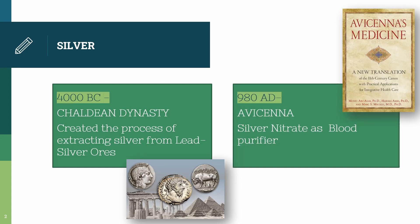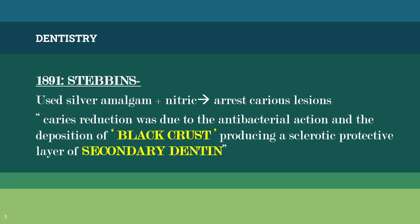Coming to our field — dentistry — silver has been seen to be used in the year 1891 by Stebbins, who used silver amalgam and nitric acid to arrest caries lesions. He said that caries reduction was due to the antibacterial action and the deposition of a black crust, producing a sclerotic protective layer of secondary dentine.